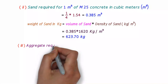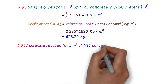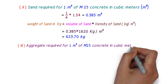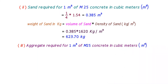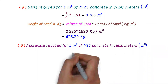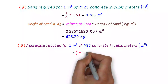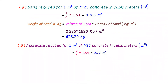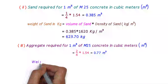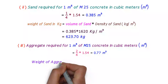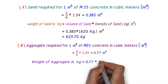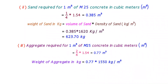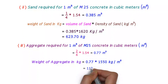The final calculation is the volume of aggregate required for 1 meter cube of M25 grade concrete in cubic meters. The volume of aggregate is equal to 2/4 × 1.54 = 0.77 meter cube. Converting the volume of aggregate into weight by multiplying volume with density, we get the weight of aggregate as 1193.5 kg.